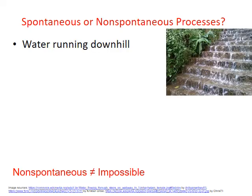Water runs downhill spontaneously — you place the water on a slope and it goes down. Water flowing uphill, on the other hand, is non-spontaneous. You can get water to flow uphill, but you have to push or pump it up the hill in some way. And the minute you stop pumping or applying that external force, the water will flow back downhill spontaneously.